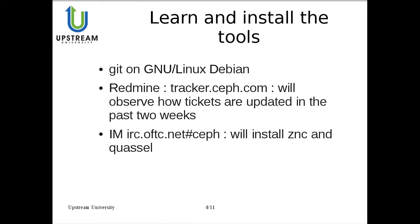The tools I will use: Git, installed on Debian Linux, which is my operating system of choice. The Redmine used by the CEF project is on tracker.sf.com, and I will observe how tickets have been updated in the past two weeks — this will tell me how I should update mine. There are many fields probably not used consistently compared to the documentation, so I will observe usage rather than read the documentation. I will also go on IRC at irc.oftc.net in the CEF channel, and because I have a shaky internet connection, I will install ZNC and use the Quassel IRC client.